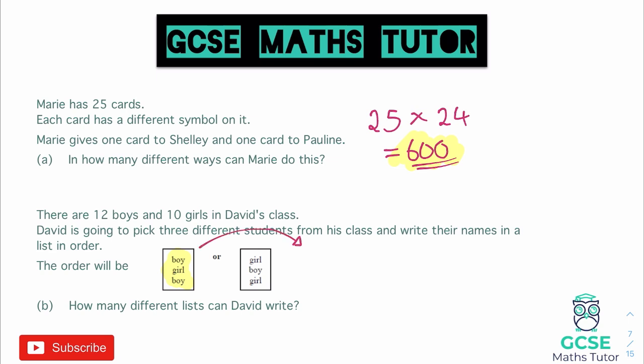On the first pick where he picks a boy, he has 12 boys to pick from. The next pick is a girl, and there are 10 girls, so that's 10. Then he picks another boy — he started with 12 but one has already been picked, so there are only 11 to choose from. So we have 12 options, then 10, then 11. We multiply all three together: 12 times 10 times 11, which comes out as 1,320 options.